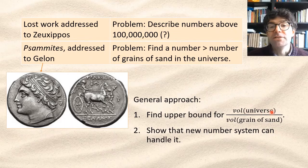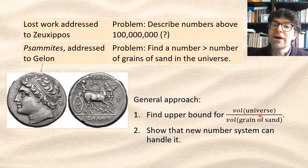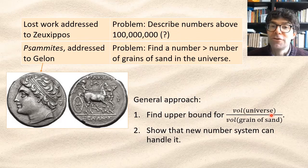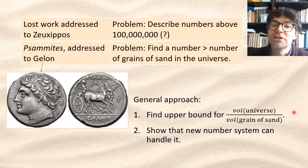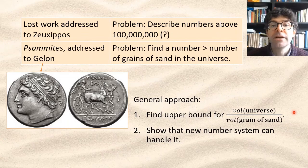As a result of that, the treatise preserves some tantalizing information about how Greek scientists of the third century BC were imagining the size and proportions of the universe, and we'll deal with that in the next video. But first let's look at Archimedes number system itself.